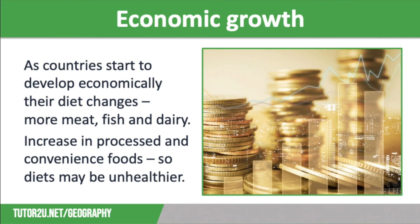The second reason is economic development. As countries start to develop economically, the diet of the population also starts to change. The higher standard of living means that people in LICs start to eat more like those in HICs, eating more meat, fish and dairy products. They move away from a cereal-based diet, and the grain starts to be used as animal feed rather than a staple for humans, meaning that demand for food increases overall.